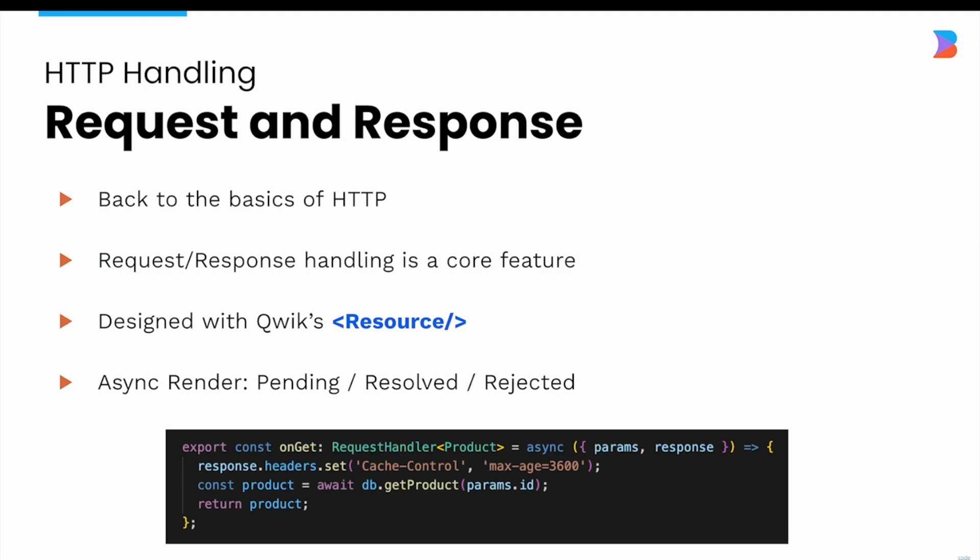One feature where Quick City really shines is request handling and its integration with existing servers. It brings us back to the basics of an HTTP server — each page can create its own on-get or on-post request handlers with their own logic, including authentication, HTTP status redirecting, or handling form submissions. By combining request handlers to load data with the resource component to render it, it provides a great utility to seamlessly communicate between the back end and front end.